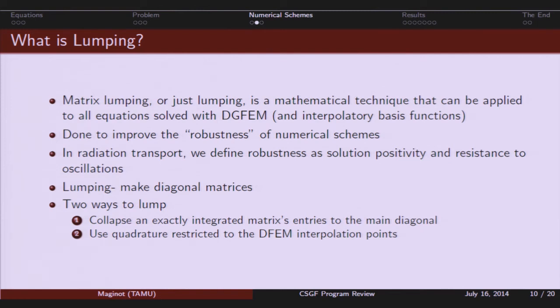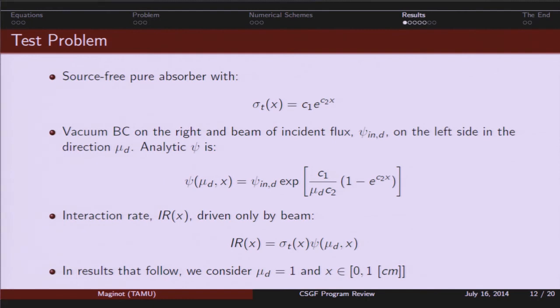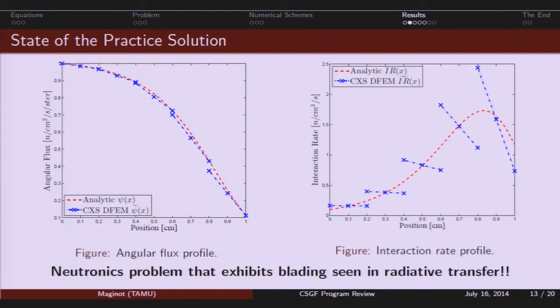All right. So, I think of this test problem as just a pure absorber. So, there's no scattering. I'm going to make the cross section exponential in space. There is an easy analytic solution. And, I'm going to look at the interaction rate because I feel like that the temperature equation for radiative transfer is driven by interaction rate. So, maybe if I look at a neutronics problem interaction rate, I'll see something that will explain the blading in the temperature profile. And, lo and behold, I do.